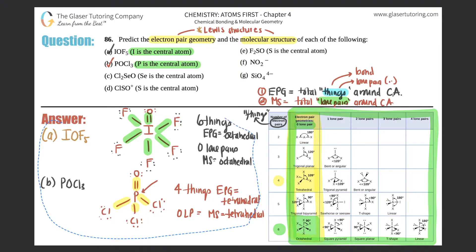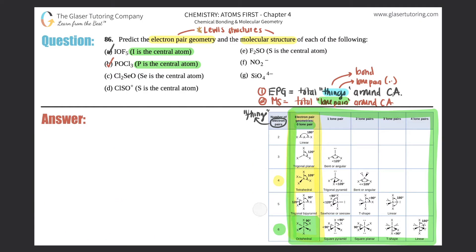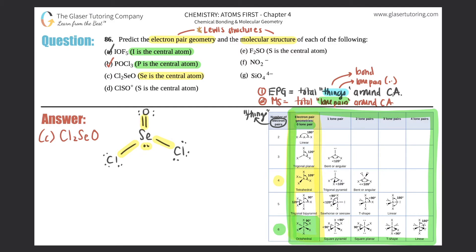Part c: Cl2SeO. Selenium is the central atom, with two chlorines and a double bond to oxygen. Each chlorine has three lone pairs to satisfy the octet, and if the Lewis structure is drawn correctly, selenium has one lone pair. Counting total things on selenium: two single bonds (two things), one lone pair (three things), and one double bond (four things) — four total things.